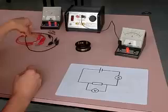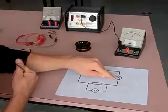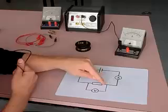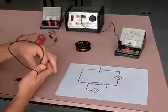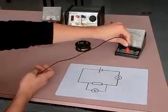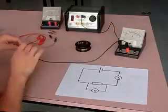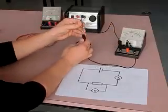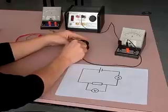And we're then going to continue around the circuit. So we're going to carry on from the positive end of the ammeter to the resistor. So we plug our lead into the positive end of the ammeter and our other end will connect to the one end of the resistor.